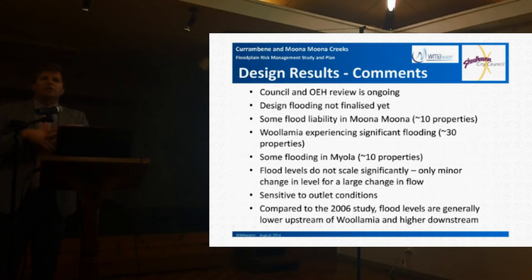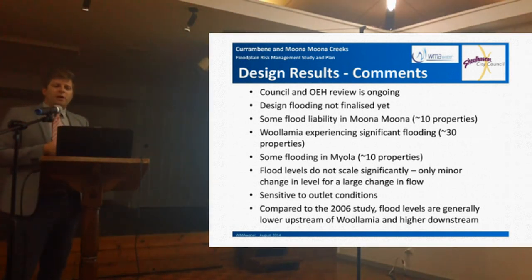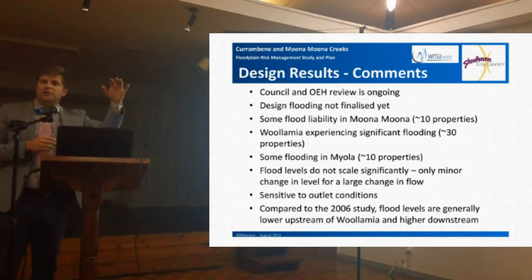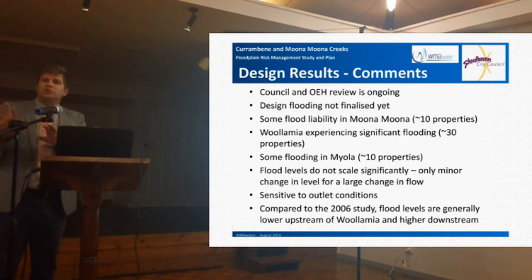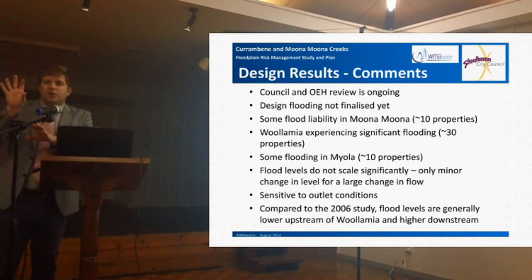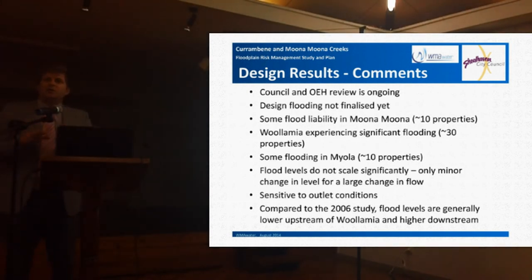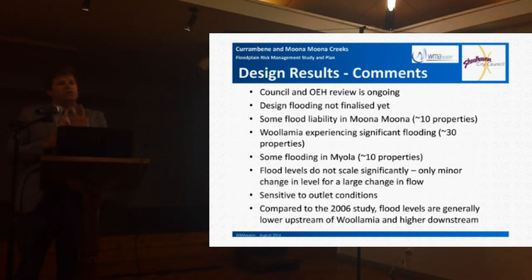We do see some sensitivity to the outlet condition — what the actual entrance looks like. Based on preliminary conversations, there will be some scour included in the work, because when you do have very large flow, you get high velocities in Curranbean Creek squeezing out the gap where there's the sand spit coming back towards the wharf at Huskersen. You will see some erosion of that sand spit and the entrance will widen slightly, but that doesn't have much impact further upstream — only worth about a foot at Woolloomire. Compared to the 2006 study, in upstream areas we're lower, but in downstream areas we're slightly higher because we're using a 20-year ocean condition, which is about 0.7 metres higher than what was used in the 2006 study.